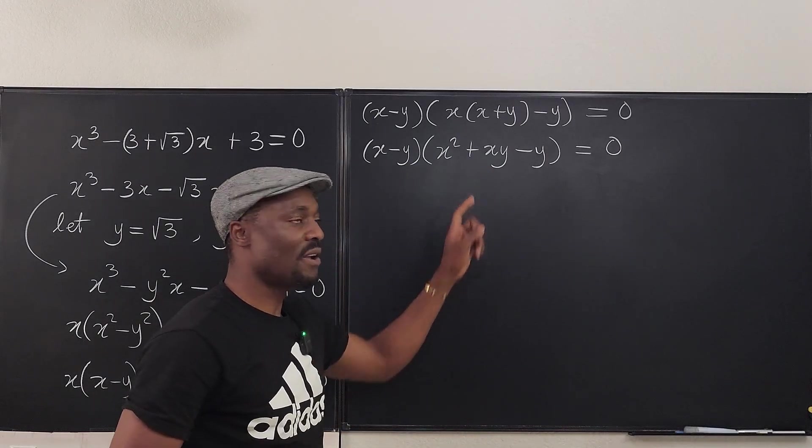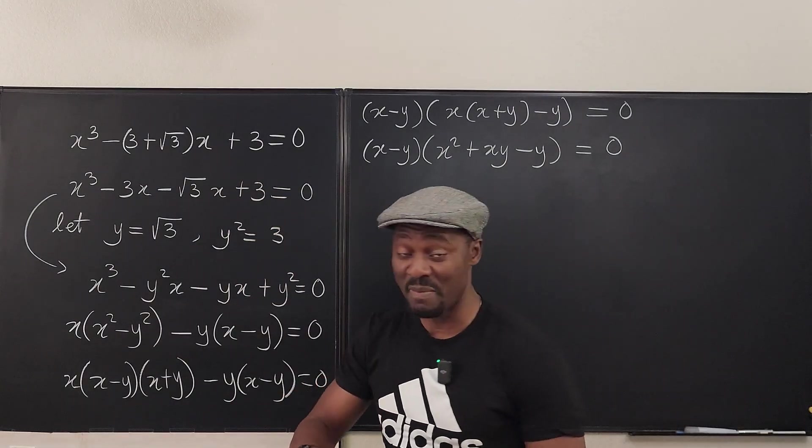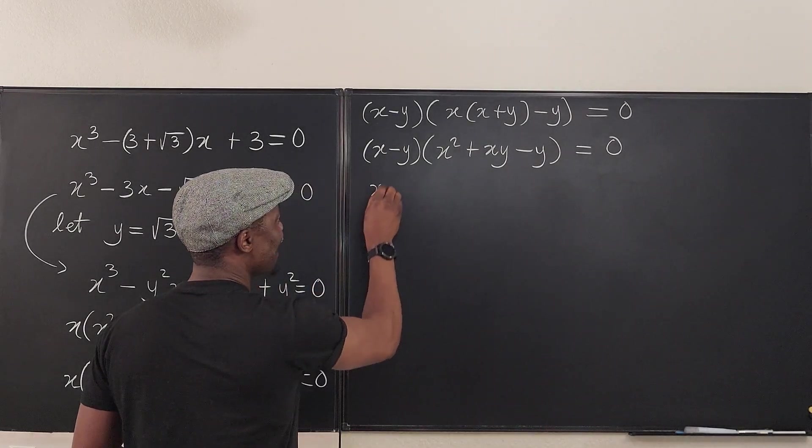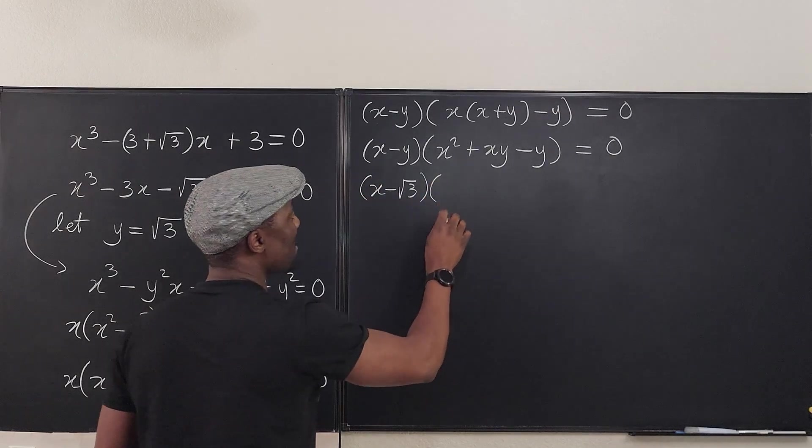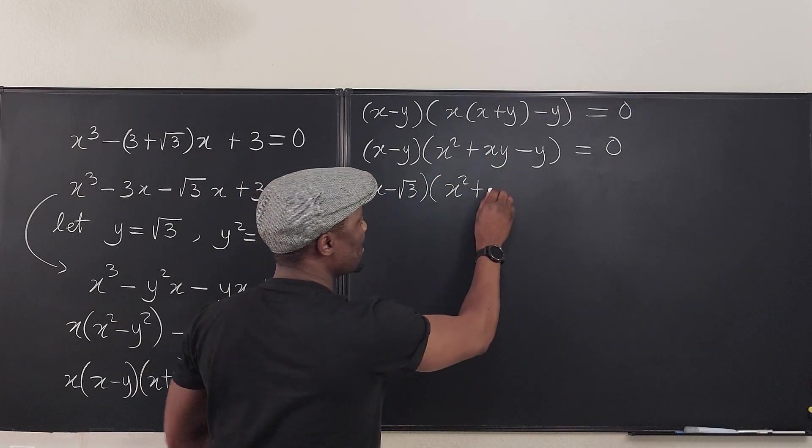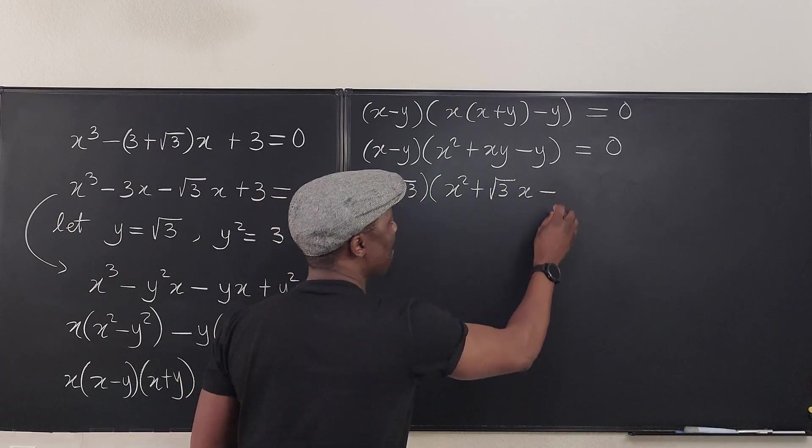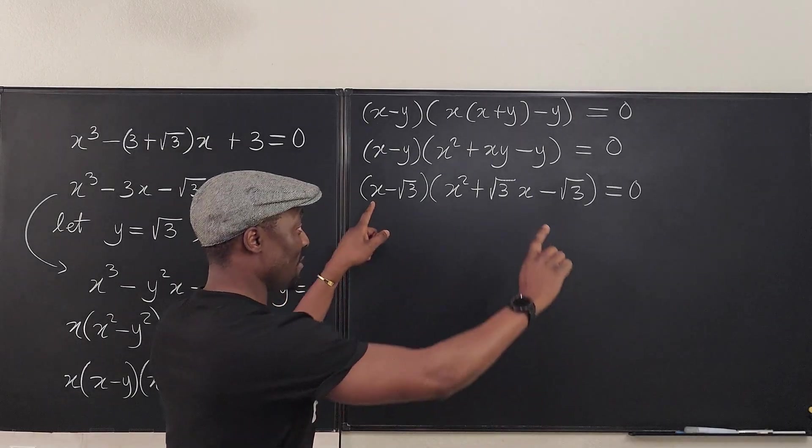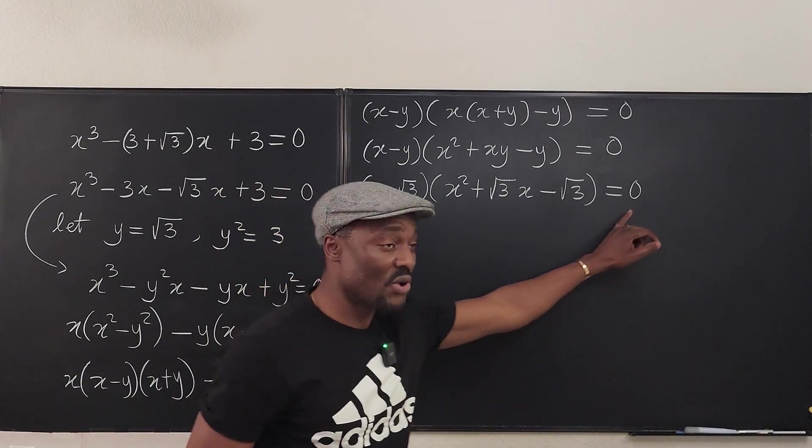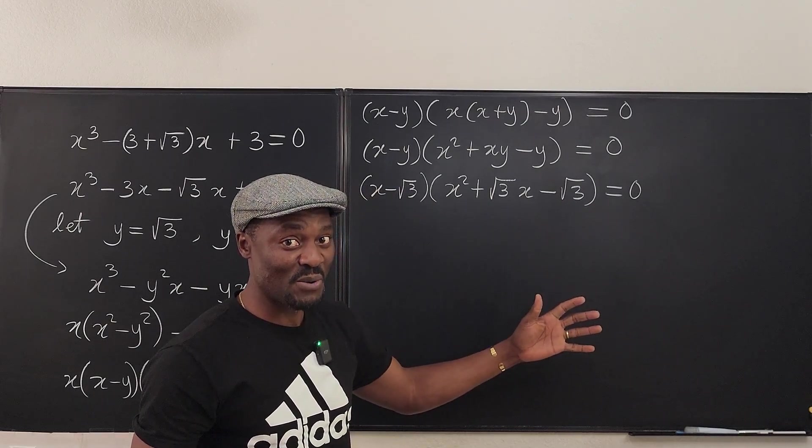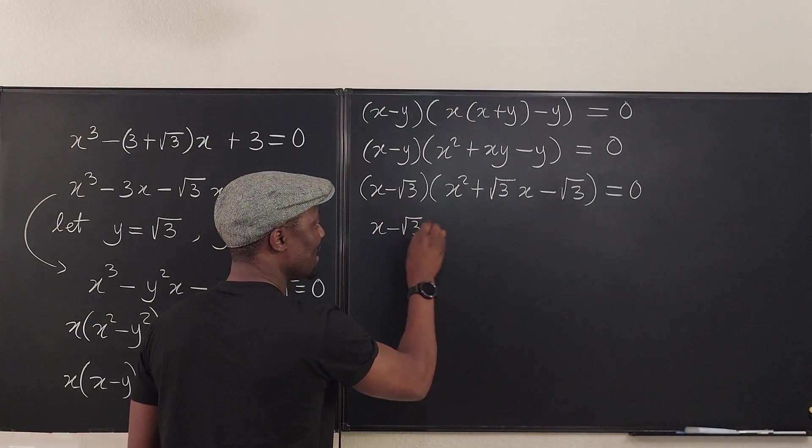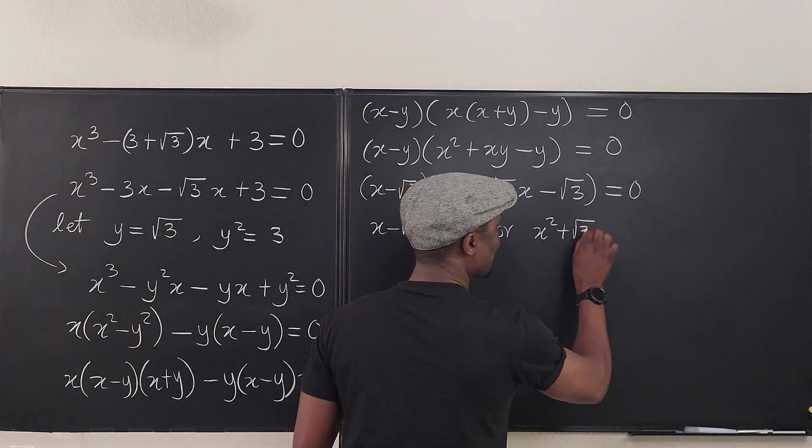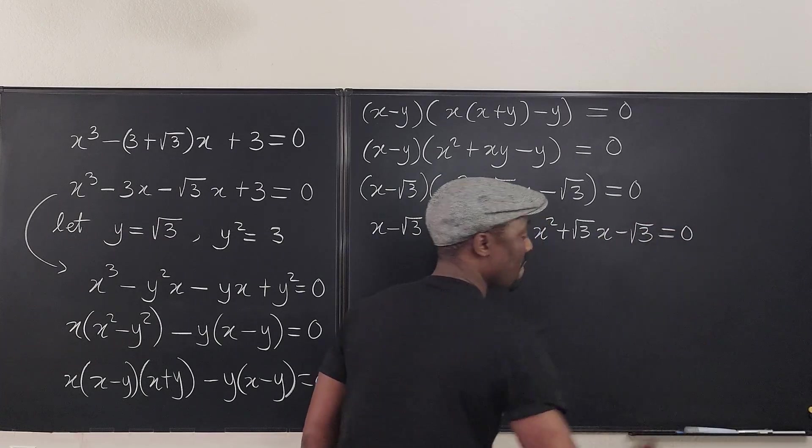Is there anyone watching this video who doesn't know how to solve this? Remember the assumption we made: we said let y be the square root of three. So this is (x - √3) times (x² + √3x - √3) = 0. By the zero product rule, the product of two numbers can only be equal to zero if one of them is zero or both of them are zeros. So we know that x - √3 = 0 or x² + √3x - √3 = 0.